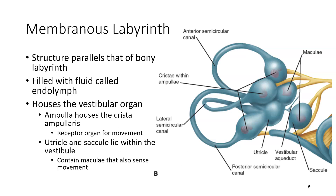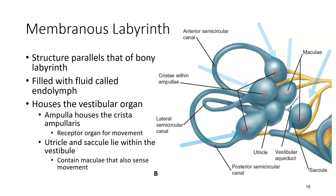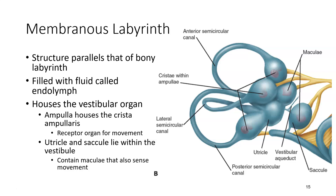Inside the osseous labyrinth is a membranous labyrinth that follows the same shape, and this is where the actual organs that process information are located. These membranous areas are filled with a fluid called endolymph. We have the vestibular organ, which consists of three different ampulla, each one holding a crista ampullaris — receptors for movement of the head. There is also an utricle and a saccule within the vestibule that contain maculae, which also sense movement. Between these five different movement-sensing locations, we can detect a lot of how the body is moving on the basis of head movement.